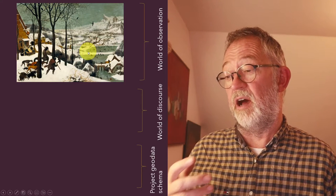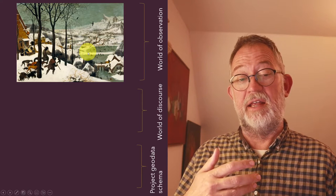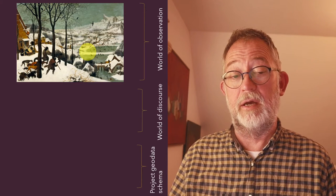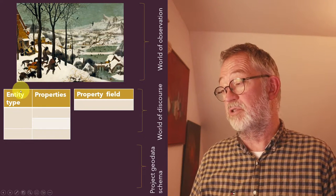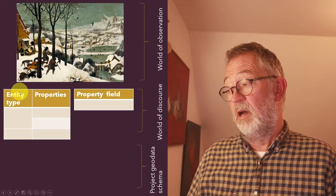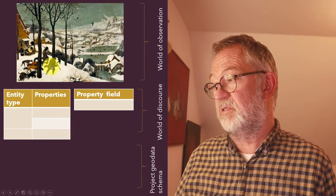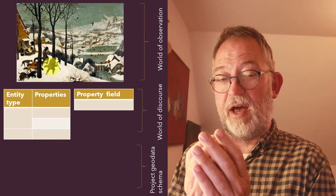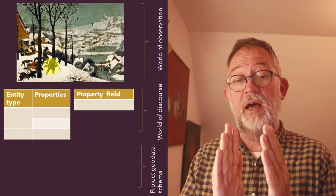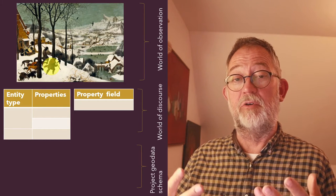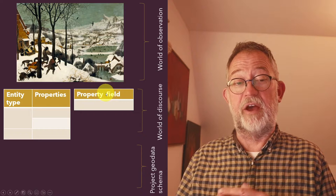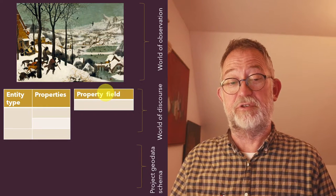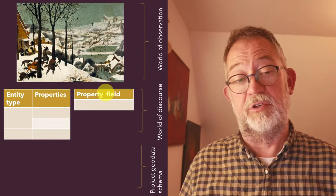The next step in our world of discourse is to decide how we look upon these phenomena. What should we call them? How should we classify and organize them? We have two different approaches: entity types, which are objects or well-defined discrete things such as trees, buildings, and roads; and property fields, which are something that varies continuously through space, such as elevation, air pressure, and temperature.